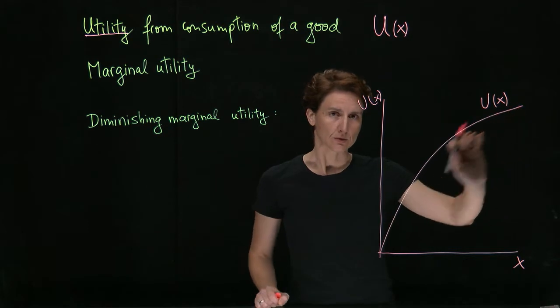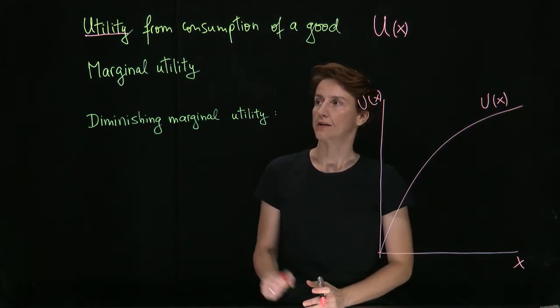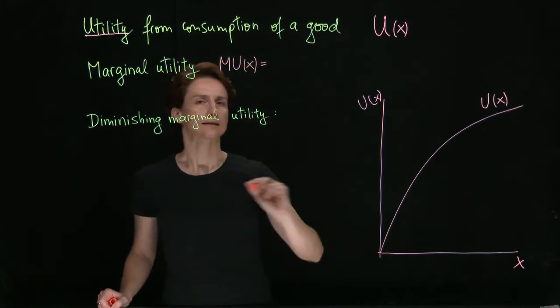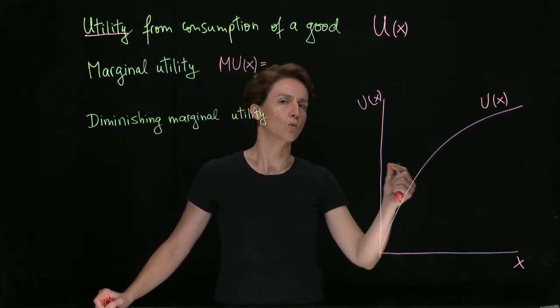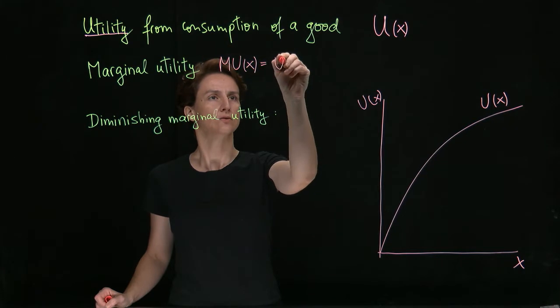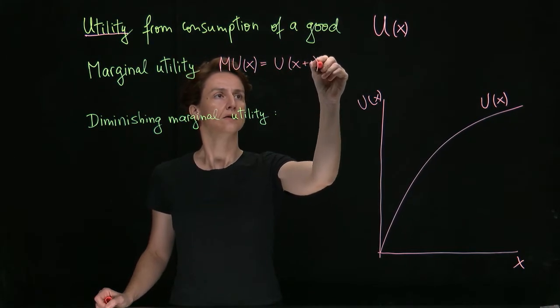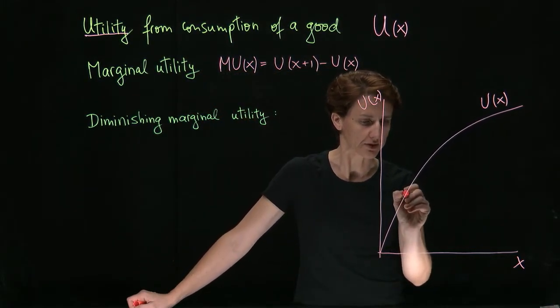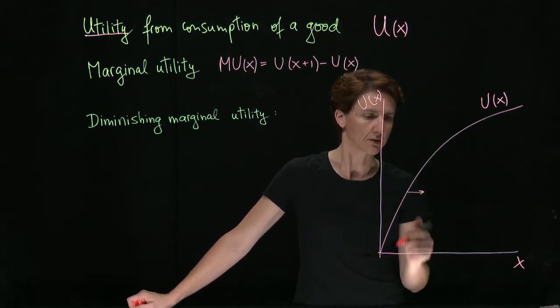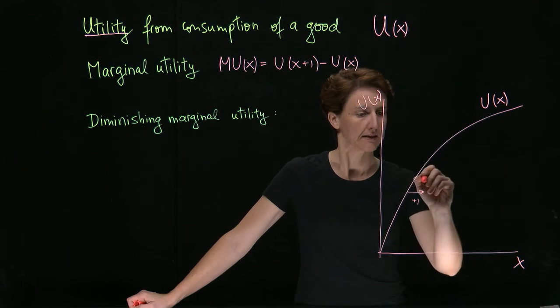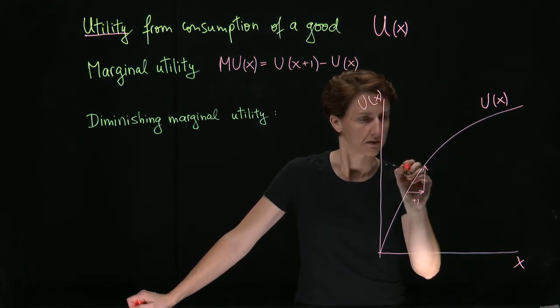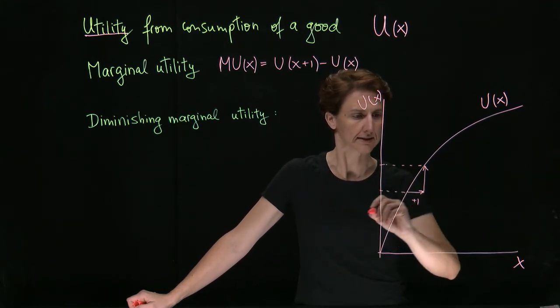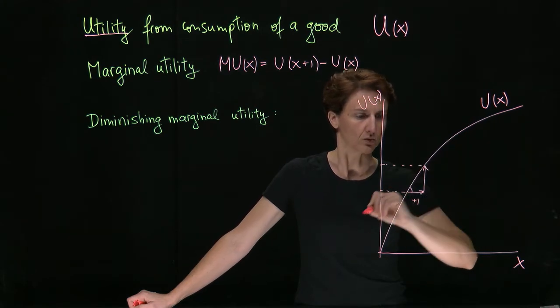It turns out that the rate at which it's increasing is important. So we're going to define marginal utility, mu of x, as the extra utility one gets from consuming one more unit of the good. So we could write that as u of x plus 1 minus u of x. In the graph, you could see that if we picture moving to the right by one unit, so adding one more unit to x, then that vertical rise is the difference between u at x plus 1 and u at x.